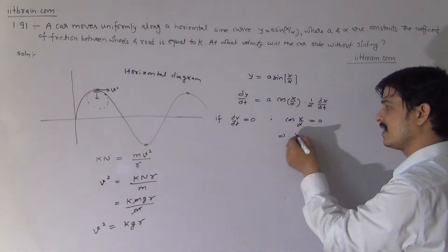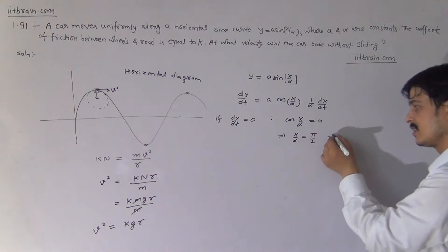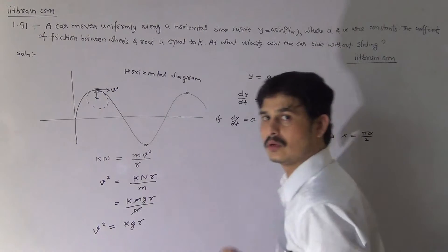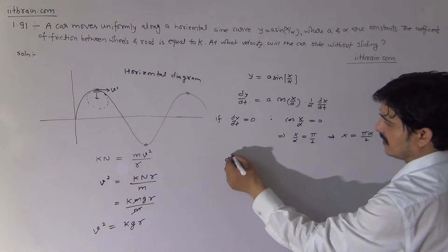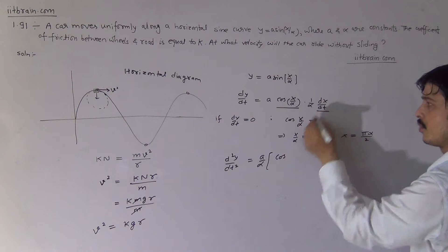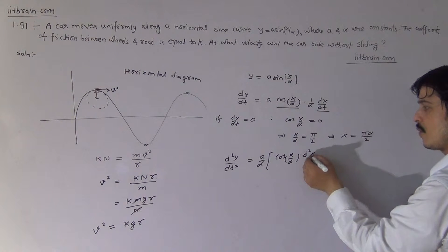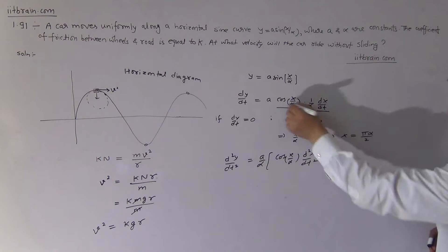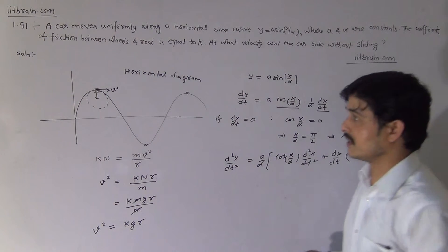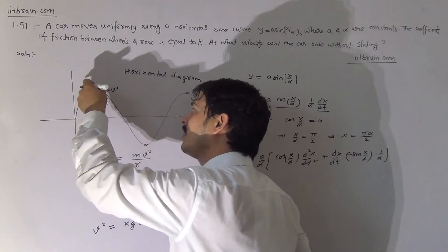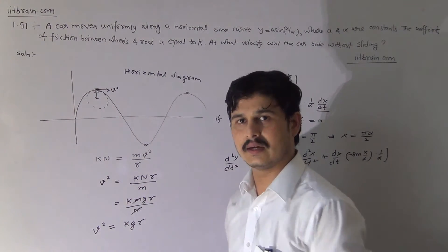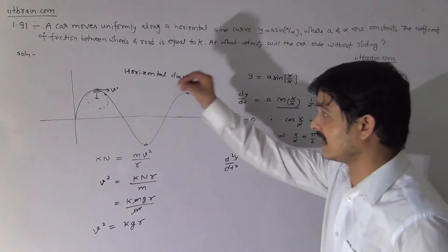So cos(x/α) = 0 implies x/α = π/2, which implies x = πα/2. So the x-coordinate of this critical point will be πα/2. Now we take the double differentiation of the curve equation. We get d²y/dt² = (a/α)·[cos(x/α)·(d²x/dt²) + (dx/dt)·(−sin(x/α)·(1/α)·(dx/dt))]. Since the car has uniform motion, there is no tangential acceleration, so d²x/dt² = 0. Only centripetal acceleration is needed.